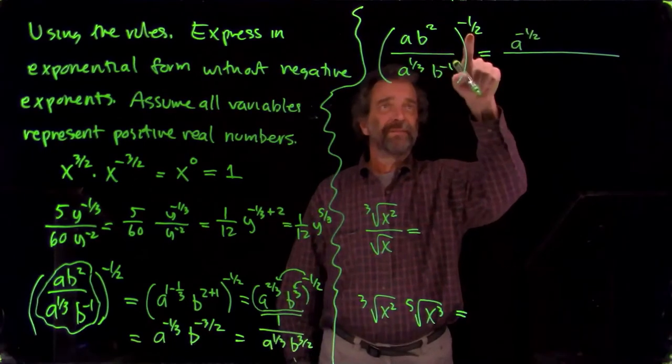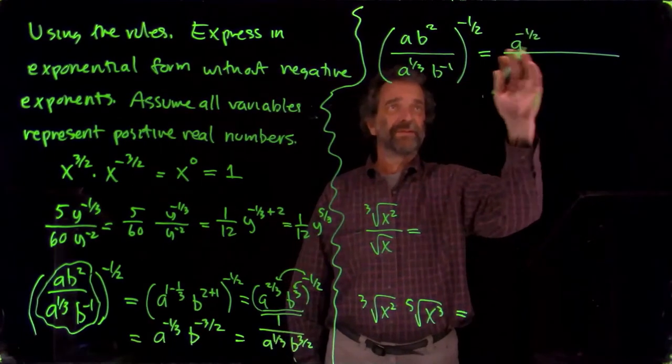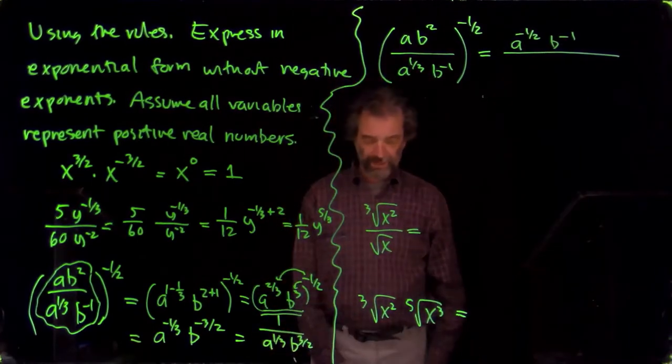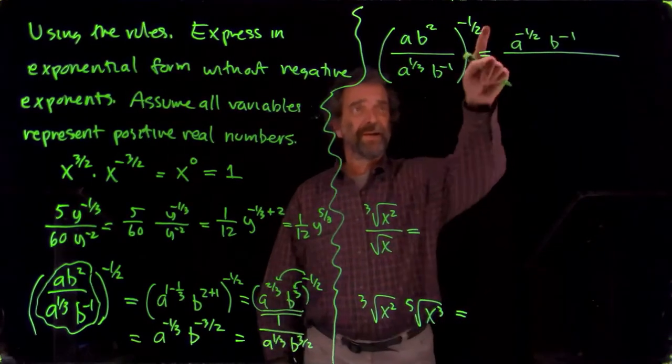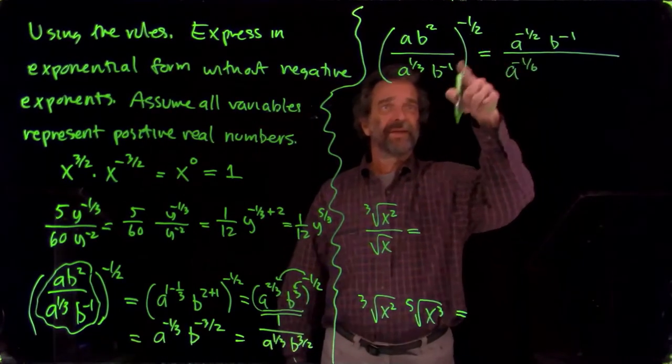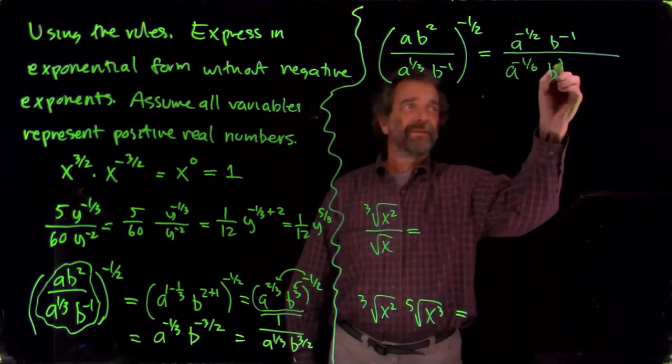So a to the first times minus one-half is a to the minus one-half, b squared to the minus one-half is b to the minus one. That's what's upstairs. And then downstairs, minus one-half times one-third, a to the minus one-sixth, and then minus one-half times minus one, b to the one-half, like that.